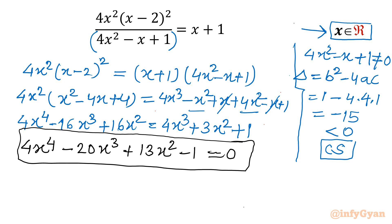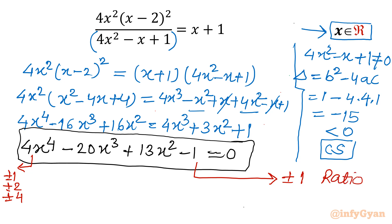I will apply the rational root theorem. The eligible factors of the constant coefficient minus 1 are plus or minus 1. The eligible factors of the leading coefficient 4 are plus or minus 1, plus or minus 2, plus or minus 4. The possible rational roots are the ratios: plus or minus 1, plus or minus 1 over 2, plus or minus 1 over 4.